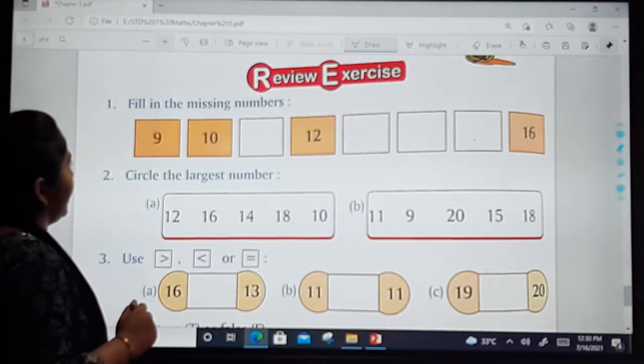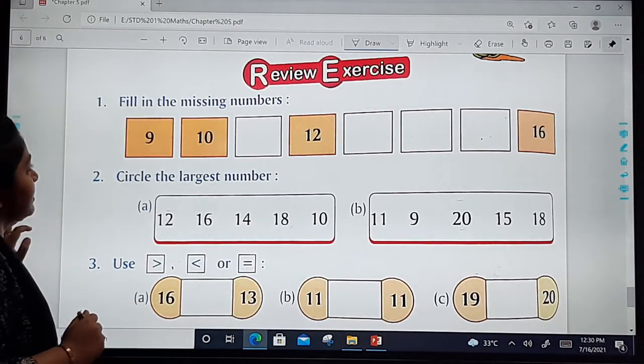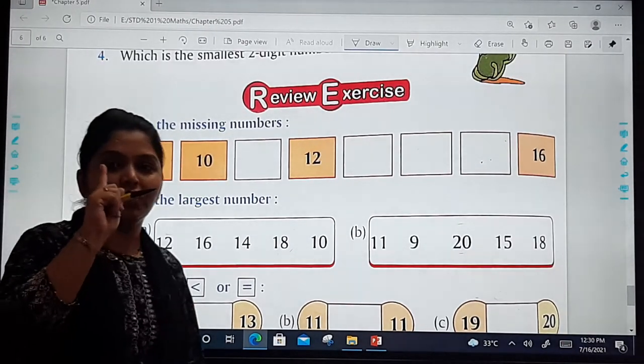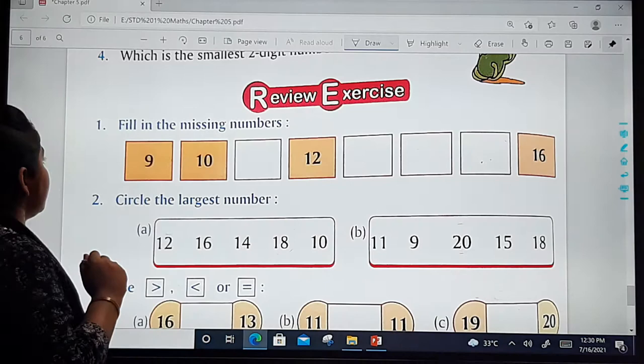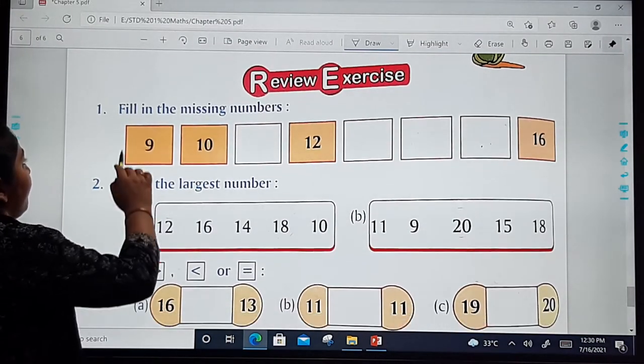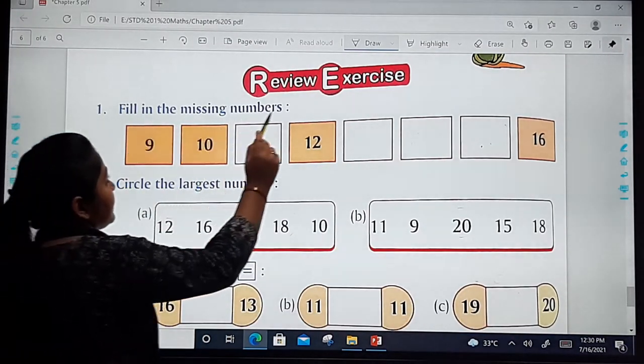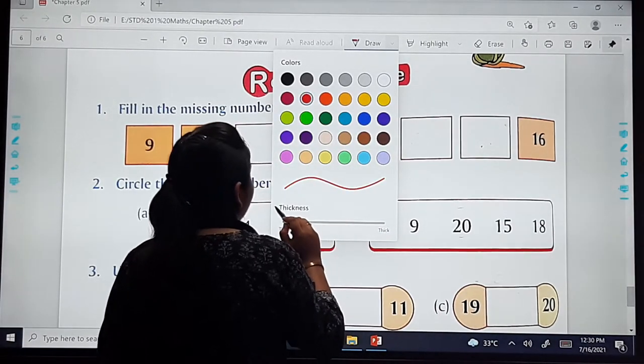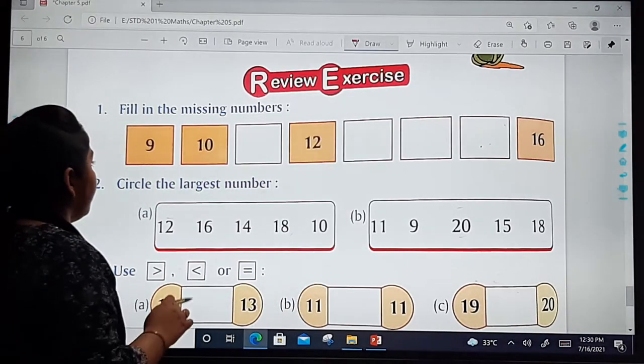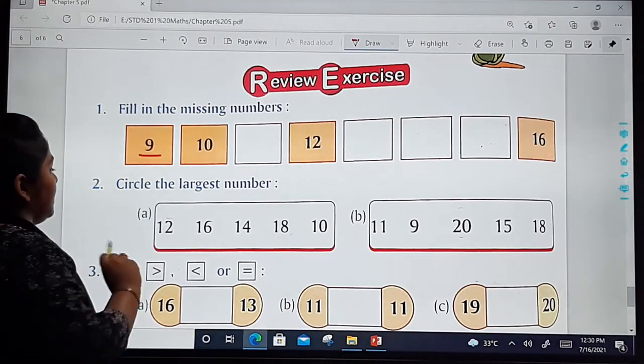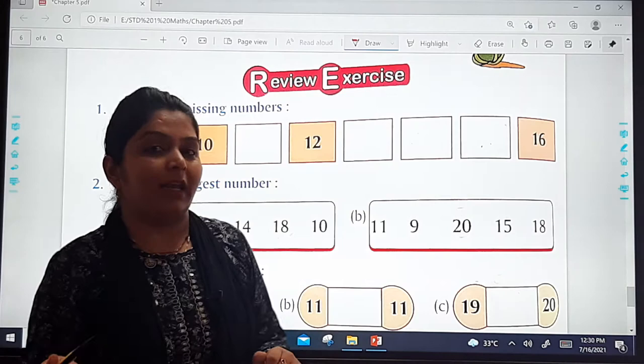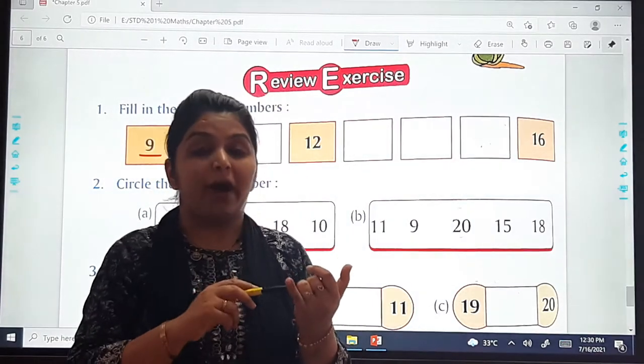Okay, yes, this is your review exercise. So we will be solving first of all question number 1. What is your question number 1? Fill in the missing numbers. You have to fill the missing numbers, children. So from where is it starting? See, over here it is starting from 9. So let us count the numbers: 1, 2, 3, 4, 5, 6, 7, 8, 9, 10.